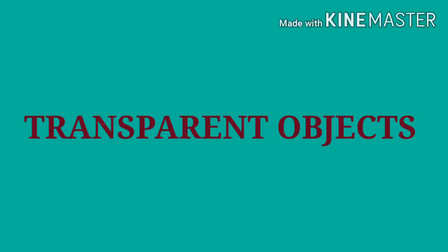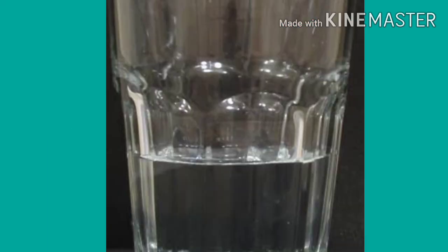What about transparent objects? If you are able to see clearly through an object, that object is called transparent. Or, if the object allows light to pass through it, it is called a transparent object — like clear water. If it is clear water, then it is transparent. Glass is also a transparent object.